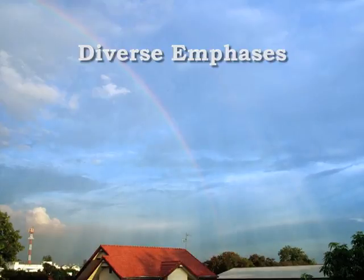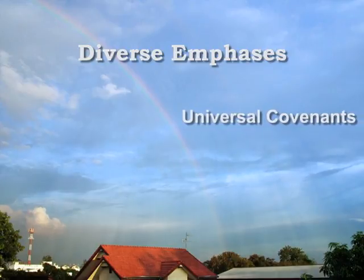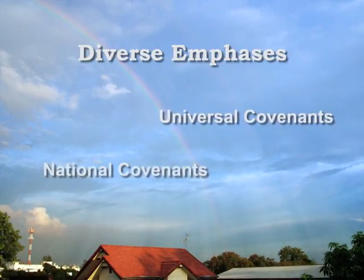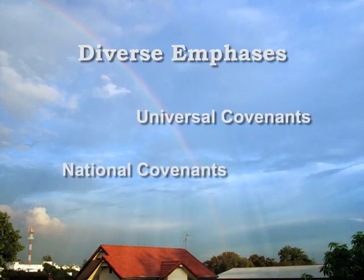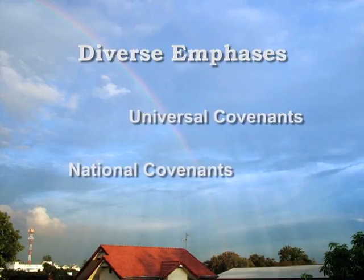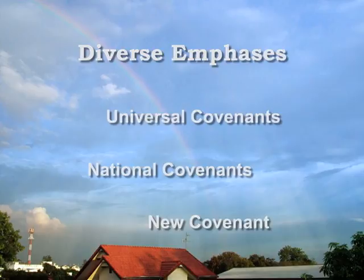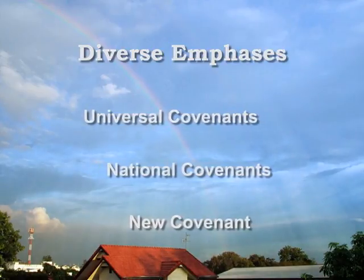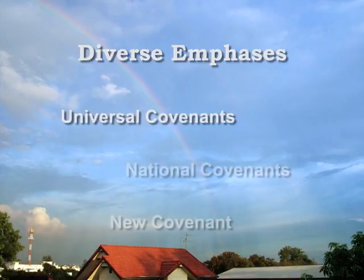The six Old Testament covenants fall into three main categories. First, the universal covenants with Adam and Noah. Second, the national covenants with Abraham, Moses, and David. And third, the new covenant predicted by Old Testament prophets. Let's look at all three groups, beginning with the universal covenants.